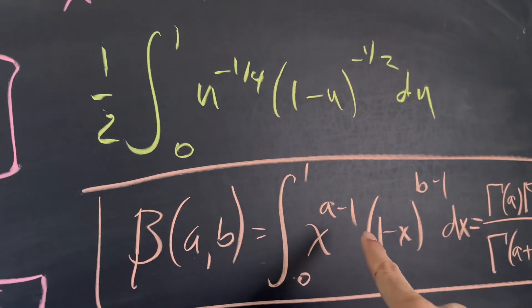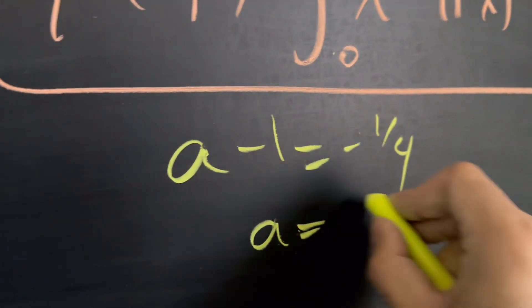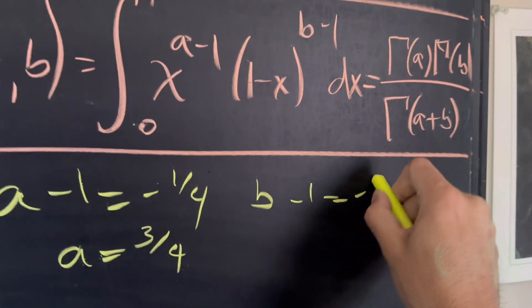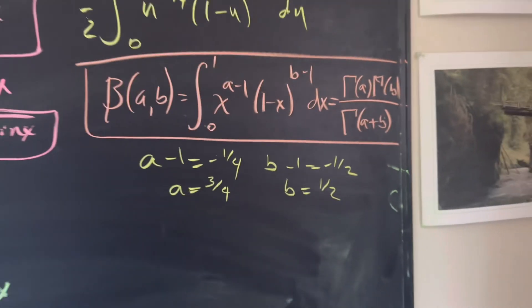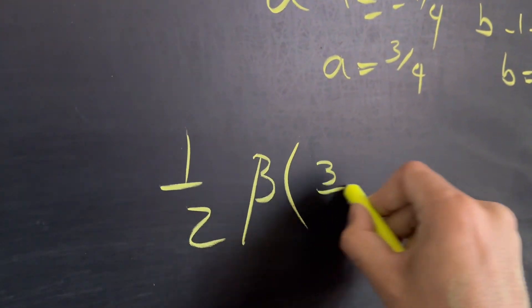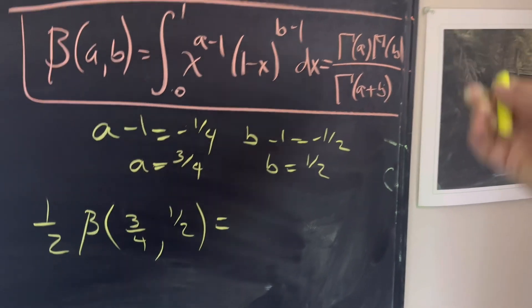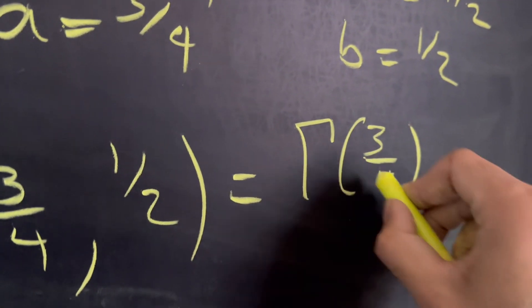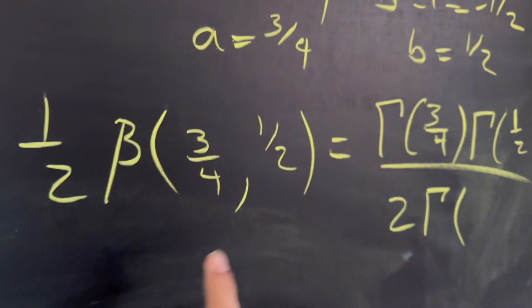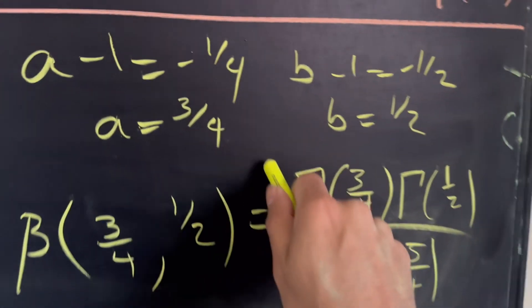We need a minus one to equal negative one-fourth, so a equals three-fourths. And b minus one equals negative one-half, so b equals one-half. So our integral is one-half times the Beta function evaluated at three-fourths and one-half, which equals Γ(3/4)·Γ(1/2) / Γ(5/4). You can simplify Γ(1/2) to root pi. That is our solution.